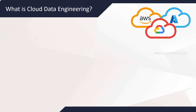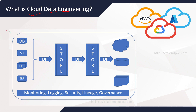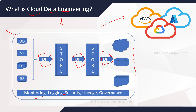Now we'll understand what is cloud data engineering. If you take the same architecture — getting your data ready for consumption with data pipelines built — cloud data engineering is basically data engineering using one or more cloud infrastructures. For example, building a data pipeline using AWS services, storing data in Azure Blob, and having the final data warehouse on Google BigQuery. Leveraging cloud infrastructure for your data engineering is called cloud data engineering.